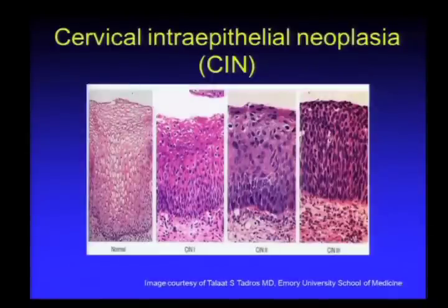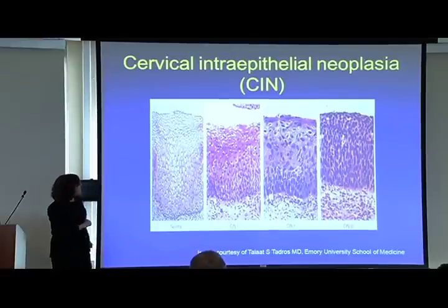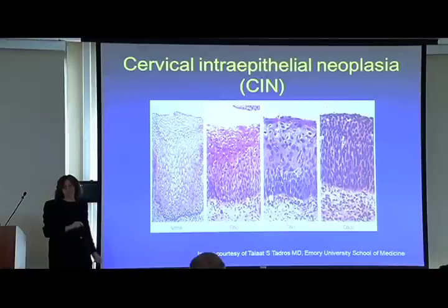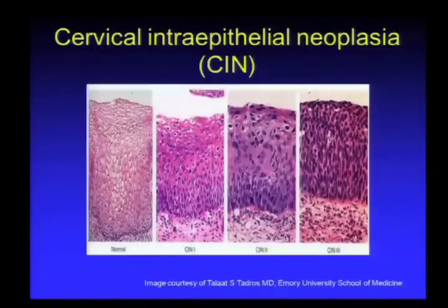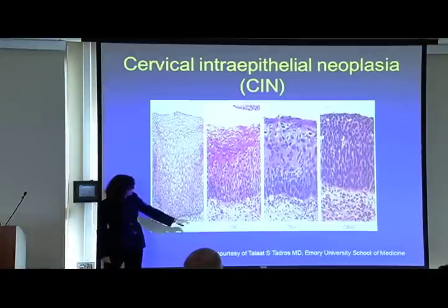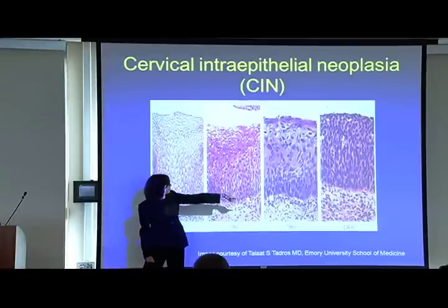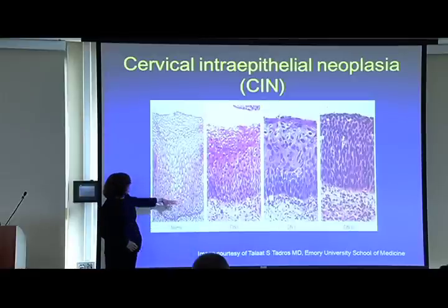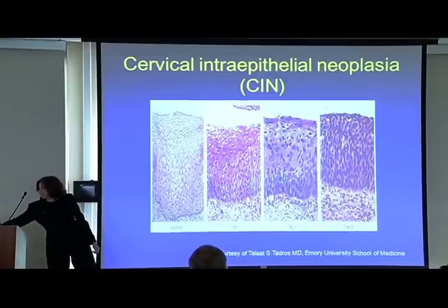When we take a biopsy, squamous epithelium looks similar to skin—with keratin on top that keeps skin waterproof. On mucosal surfaces like the cervix we don't have that, but we see larger cells differentiating to smaller cells toward the surface. The basement membrane separates the epithelium from underlying tissue. Progressing from normal to mildly abnormal to moderately abnormal—cervical intraepithelial neoplasia grades 1, 2, and 3—by grade 3 abnormal cells extend full thickness, but because they don't cross the basement membrane, it is not yet cancer.